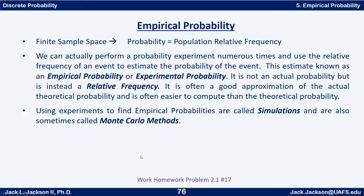If we have a finite sample space, the probability actually equals the population relative frequency. We can perform a probability experiment numerous times and use the relative frequency of an event in the sample to estimate the probability of the event. This estimate is known as an empirical probability or experimental probability — it is not an actual probability but instead a relative frequency.